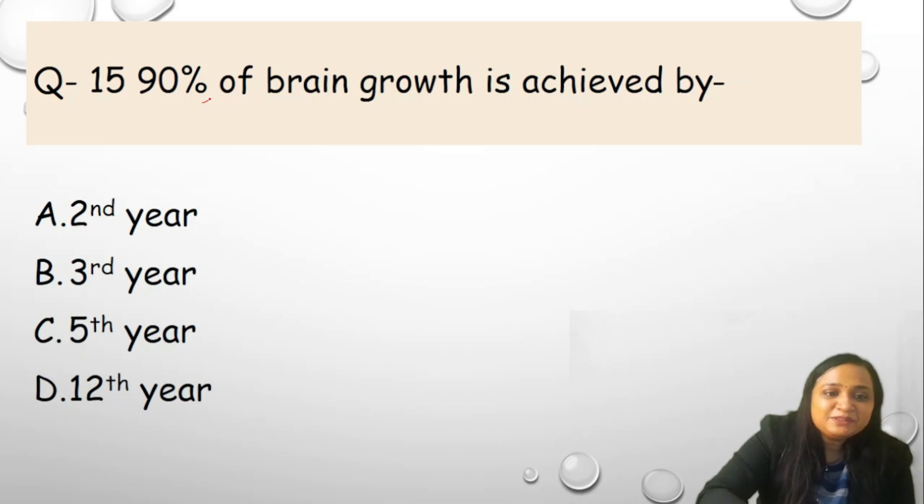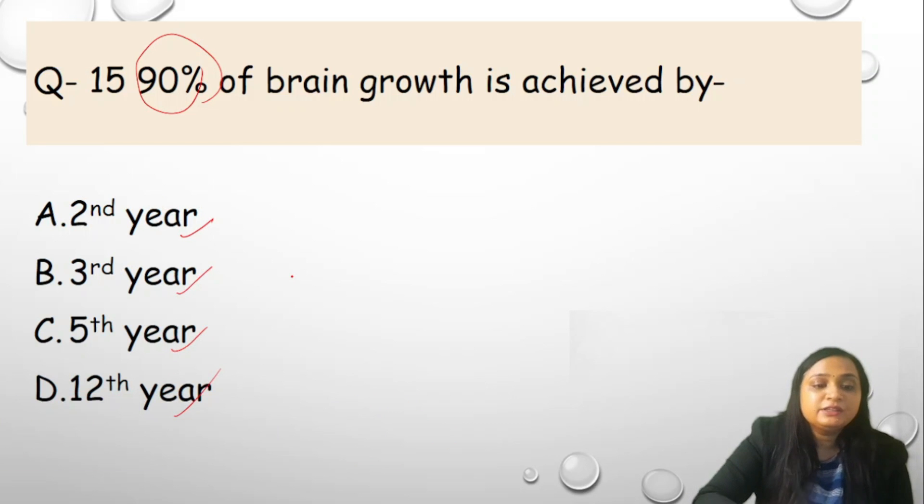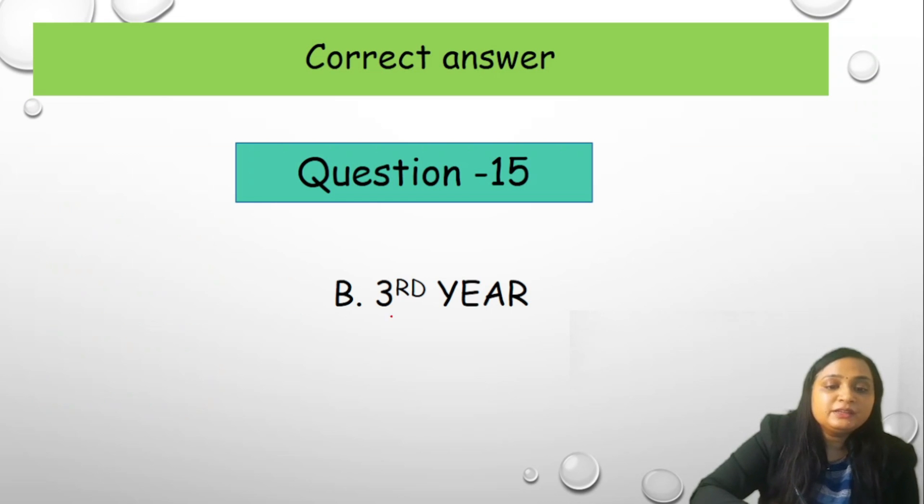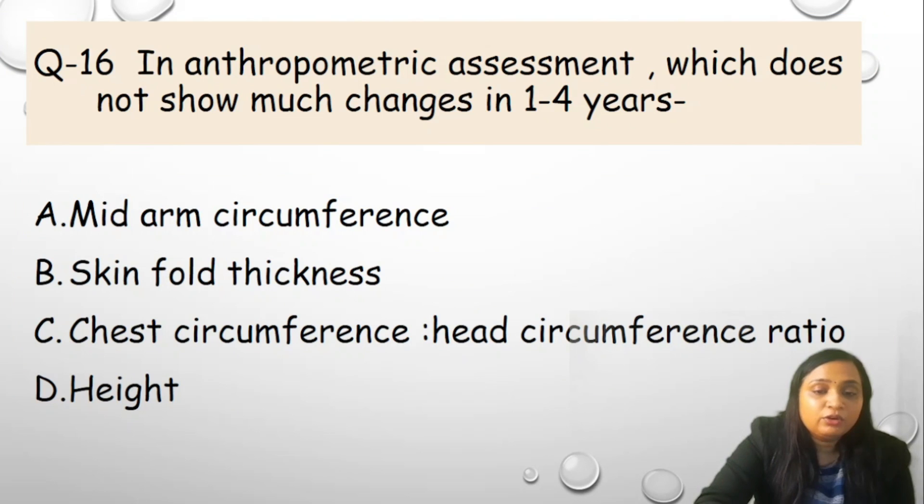Question number 15, 90% of the brain growth is achieved by - this is repetition of the question and I should say you all should know if you all gone through my previous 3 lectures. Options are 2nd year, B 3rd year, C 5th year or D 12th year. Correct answer is B, 3rd year. You need to remember these statistics. By 1 year, 72% of the adult size and brain volume is achieved, and by 3rd year it is 90% of the adult size or brain volume.